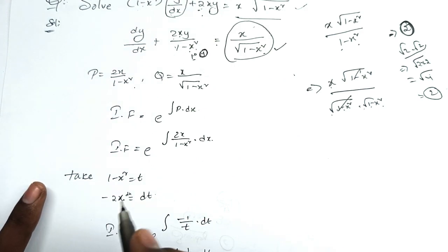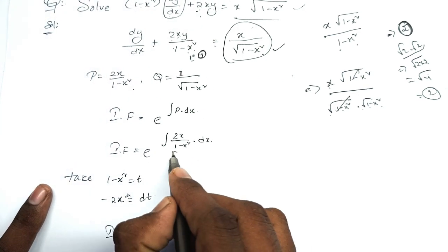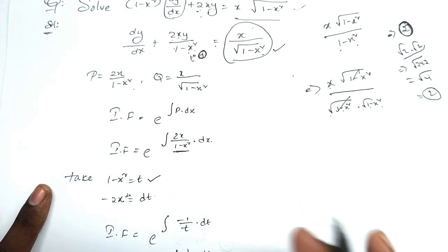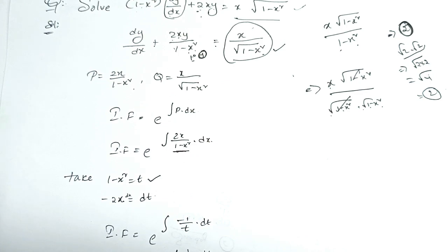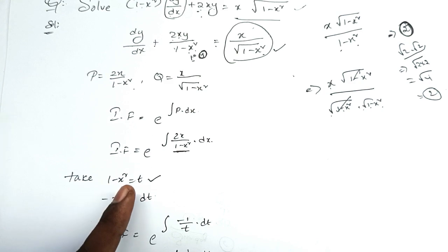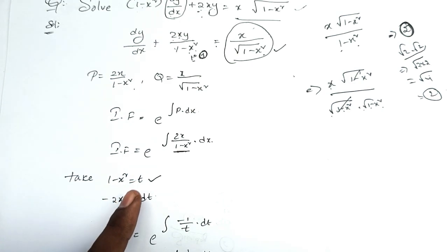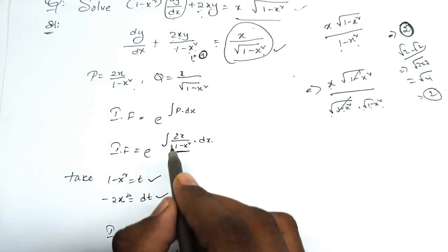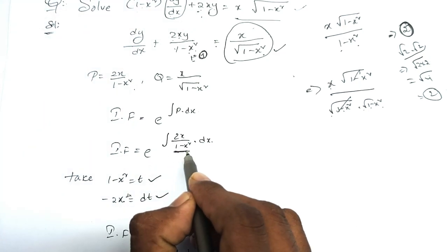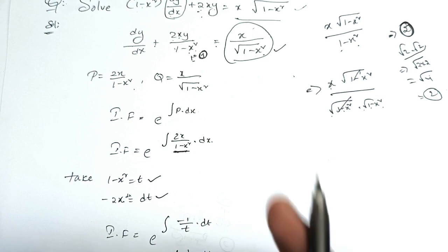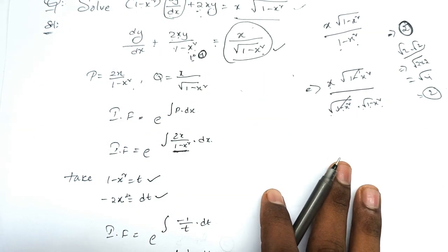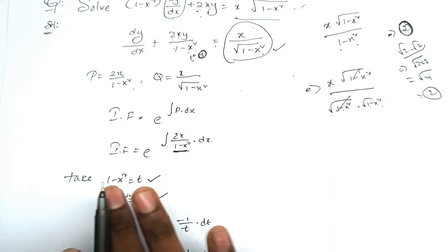Let t = 1 - x². Taking the derivative, we get dt = -2x dx, so 2x dx = -dt. The denominator value is t, so we substitute to find the integral of 2x/(1 - x²) dx in terms of t.